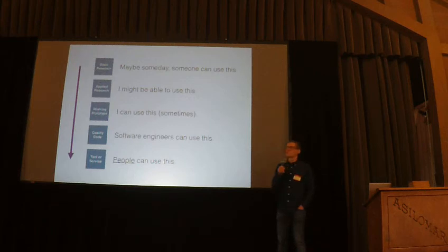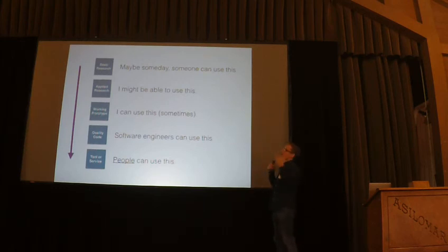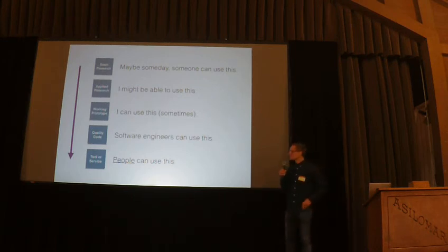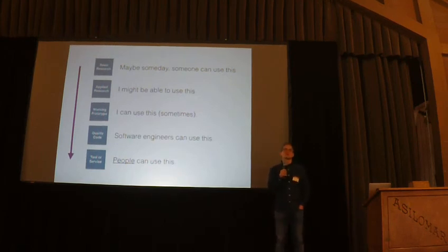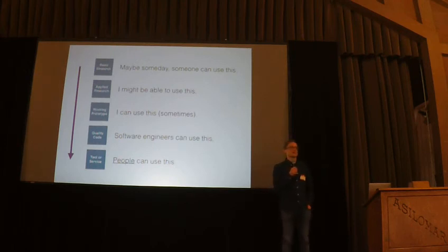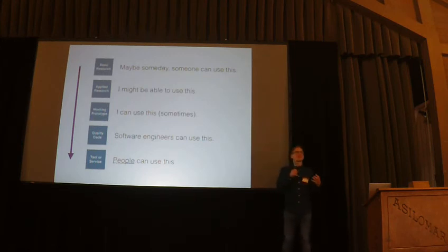The way we thought about Prophet is: you start with an idea for how to solve a problem, then you have a working prototype — the most exciting phase, where it worked for you one time out of ten. Then there's the quality code phase. Prophet was usable with four engineers at Facebook if we coached them, but packaging it into a tool where people who are not experts in statistics can use it was a huge breakthrough in usability. A lot of people stop at working prototype and don't go the extra couple steps to make something that really democratizes the tool.